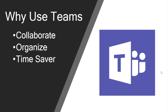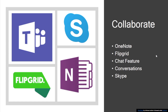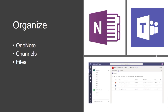Why would someone use Teams? With Teams, you can collaborate, stay organized, and even save time. We use Teams to collaborate by inserting OneNotes and Flipgrid. There's even a chat feature built into Teams. You can have an ongoing conversation, and there's even Skype so you can set up a meeting and Skype face-to-face with everyone involved. We love the organization that Teams offers — you can use the added OneNote that comes with the team when you create it, or add your own OneNotes and even a class notebook. There are channels built into Teams, and you can add specific channels for your content or different topics you are discussing with your group.